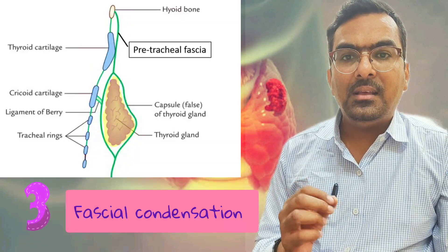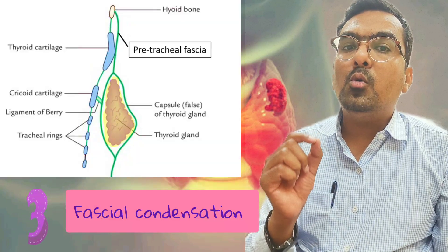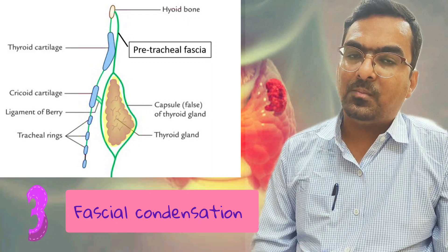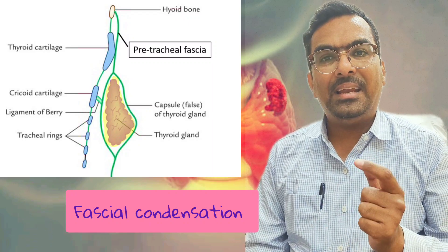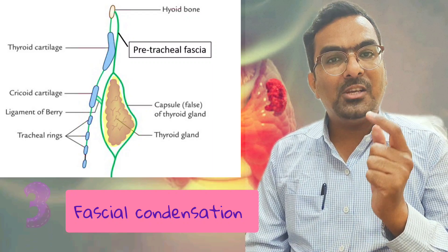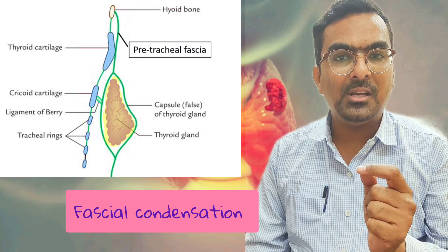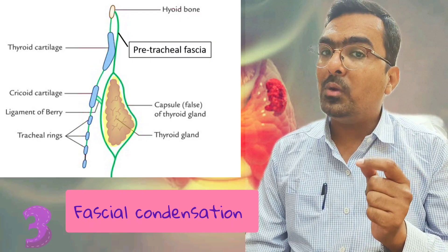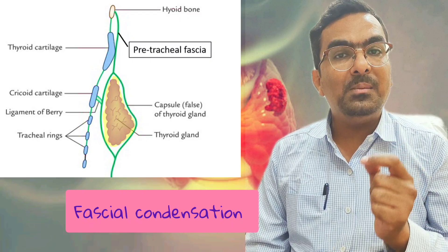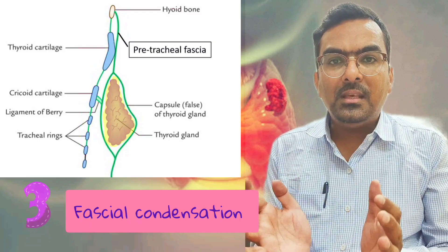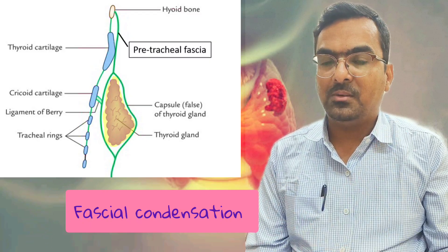The third reason is fascial condensation. The thyroid gland is in close relationship to the larynx via two structures: first, the ligament of Berry, and second, the fascial condensation of the investing layer of deep cervical fascia, also known as the pretracheal layer of deep cervical fascia. Because of this, the thyroid also moves during deglutition.